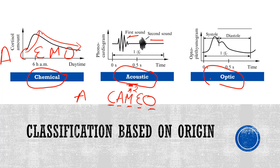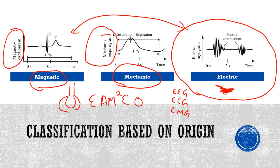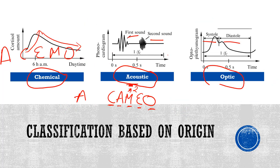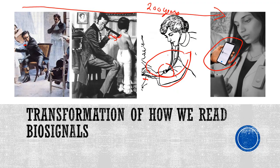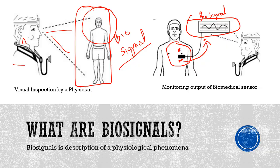Optical biosignals benefit from light absorption and scattering relevant to the propagation volume and medium, both changing in a physiologically relevant way. The photoplethysmogram is an example — we are able to detect whether there is any systole or diastole occurring, giving an accurate idea of the circulatory system. These are the six major biosignal origins: magnetic, mechanic, electric, chemical, acoustic, and optic — remembered by the mnemonic CAM²EO or CAMEO.